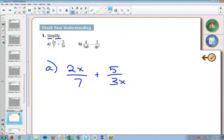So we have to think, well, in order to add fractions, I need a common denominator. On this side, I have a 7. On this side, I have a 3x. What's missing from this side? A 3x. So we multiply by 3x and 3x on the top.